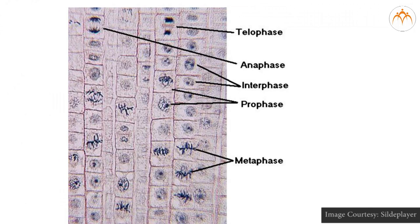Metaphase: the nuclear membrane and nucleolus disappear completely, and there is further thickening of chromosomes. Chromosomes get arranged at the equatorial plane of the cell, and this is a key feature to identify metaphase. Spindle fibers arise in the cytoplasm and get attached to the centromeres of the chromosomes. Usually, counting of chromosomes is done at metaphase.